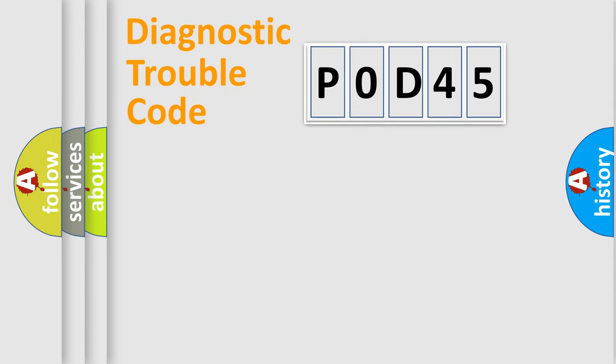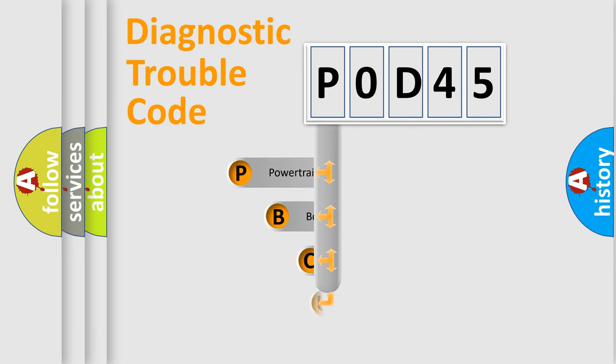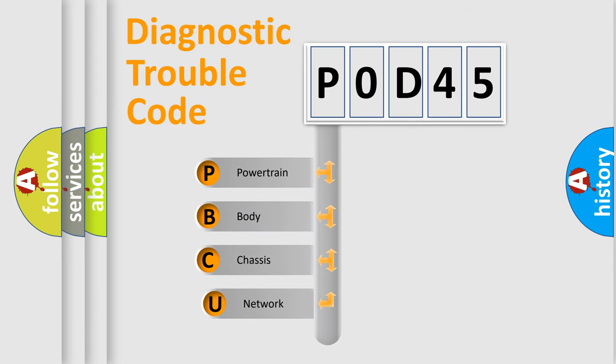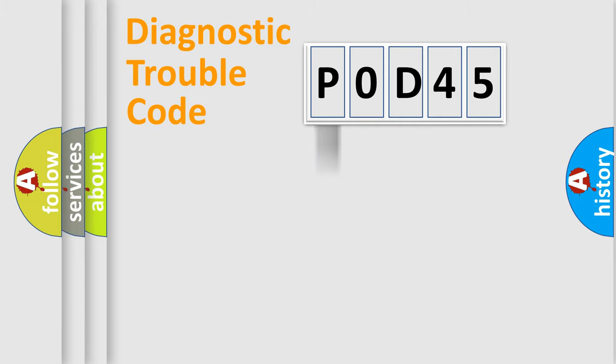Let's do this. First, let's look at the history of diagnostic fault code composition according to the OBD2 protocol, which is unified for all automakers since 2000. We divide the electric system of an automobile into four basic units: Powertrain, Body, Chassis, and Network.